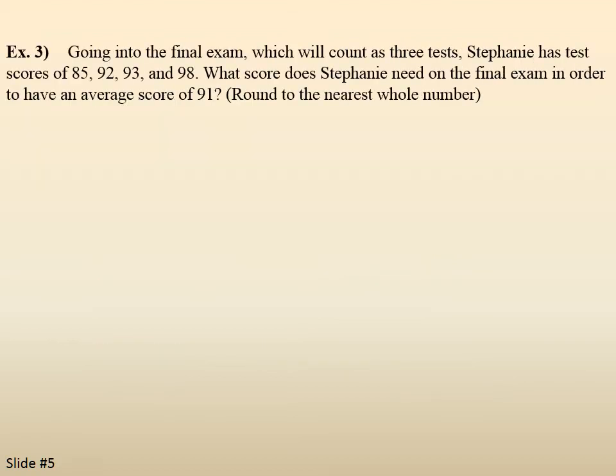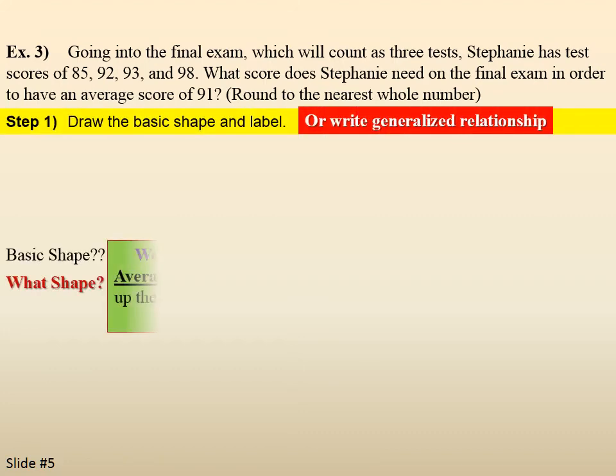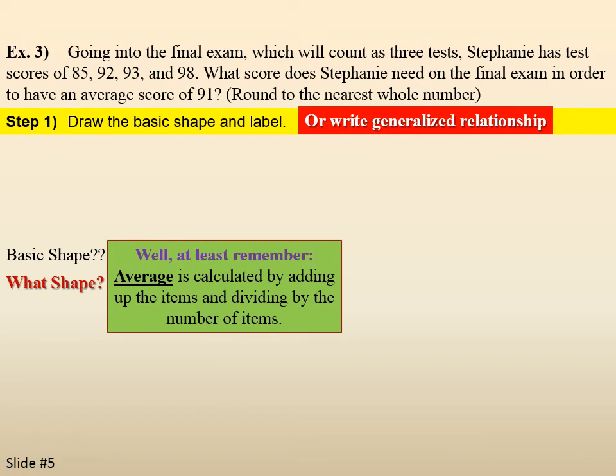Example 3. Going into the final exam, which will count as three tests. Stephanie has test scores of 85, 92, 93, and 98. What score does Stephanie need on the final exam in order to have an average score of 91? Round to the nearest whole number. Step one, draw the basic shape. There's no basic shape. Okay. So, at least write the generalized relationship. So, hopefully, remember that average is calculated by adding up the items and then dividing by the number of items.